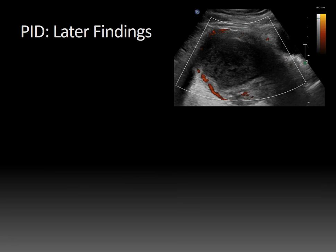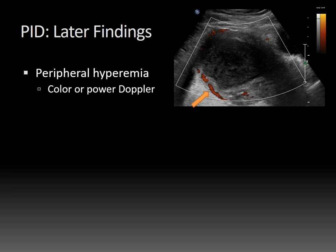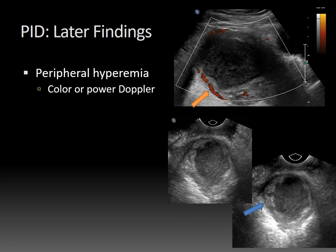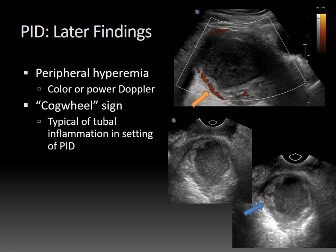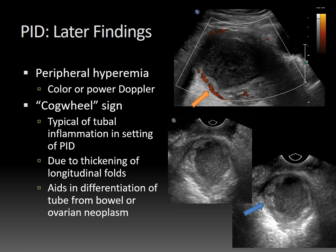Some additional later findings: you might see peripheral hyperemia around the dilated inflamed tube, which you can see on color or power Doppler. Remember, power Doppler is a bit more sensitive than color Doppler but gives you no information on direction of blood flow. Another finding fairly specific for tubal inflammation is the cogwheel sign. You'll see thickening of the longitudinal folds within the tube, giving you this cogwheel appearance — as in this case. That will help you differentiate tube from bowel or ovarian neoplasm.